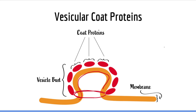The same process occurs in the plasma membrane of cells during endocytosis. Endocytosis is the process that cells use to take in foreign material by creating a vesicle out of the plasma membrane. We will talk more about endocytosis in the next few slides.